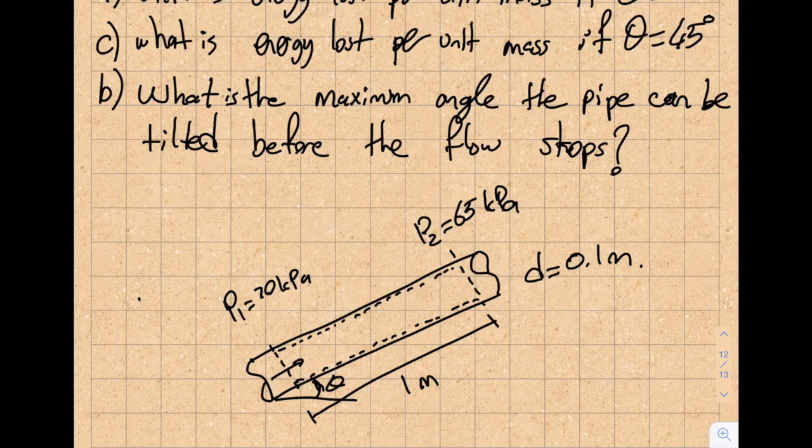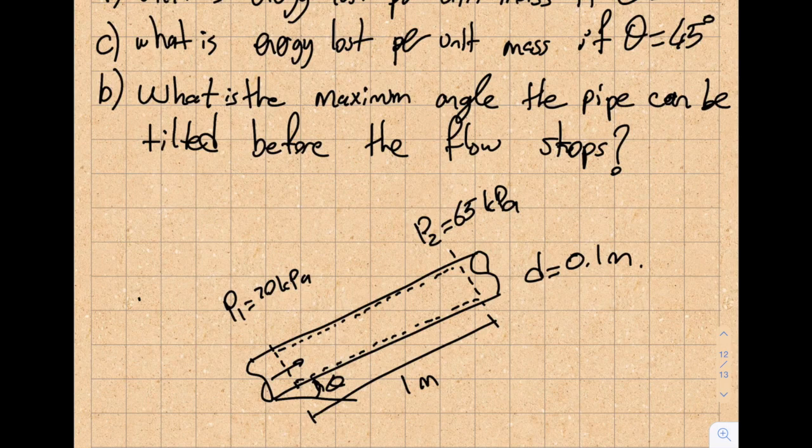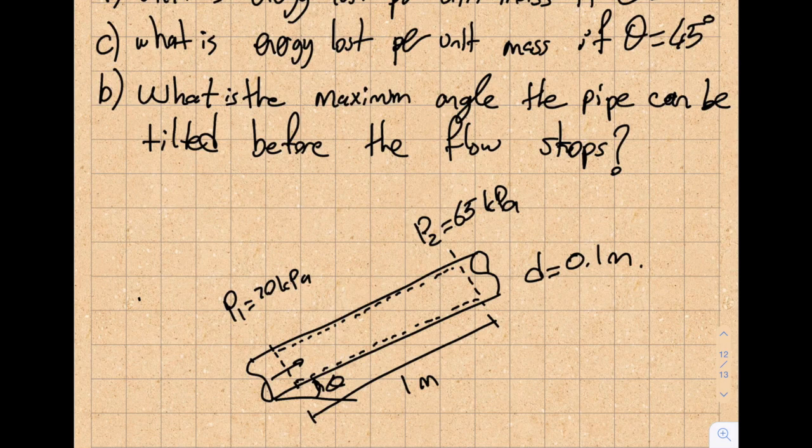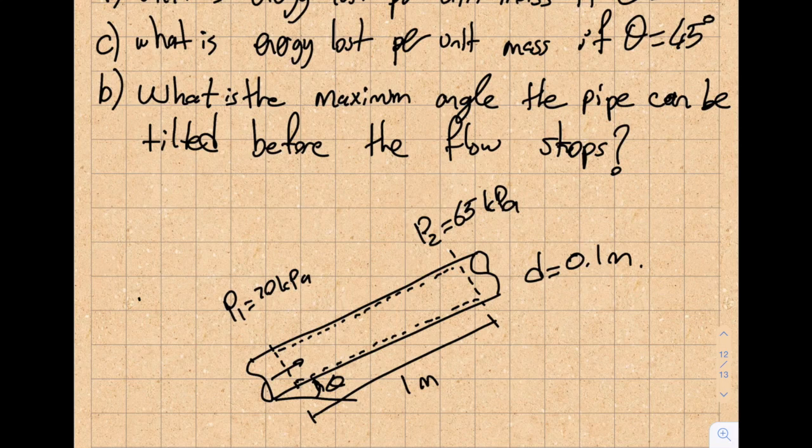And the second part of the question asks, I'm going to increase this angle to 45 degrees. How about now? What is the energy loss per unit mass? And the third part is asking me, what is the maximum angle the pipe can be tilted before the flow stops?